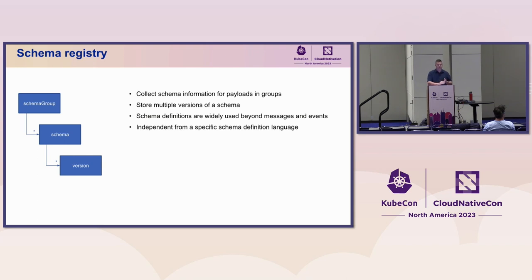As with the majority of specifications we provide — and this is even more so the case with the registry — we provide guides and flexibility where possible. Outside of the event definitions, there is also support for multiple versions of the schema in parallel. Within the registry specification itself, there are examples of how this gets broken down and how to consume it.